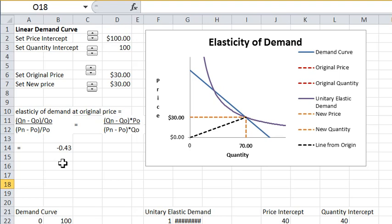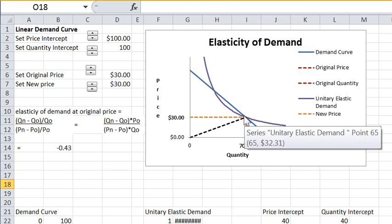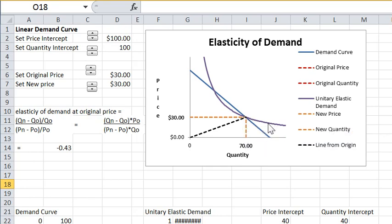So the borderline case is where demand is unitary elastic, where the elasticity is exactly equal to one. This purple curve that goes through the same point as on the demand curve at the original price has unitary elasticity at every single point on the curve. It's unitary elastic everywhere.